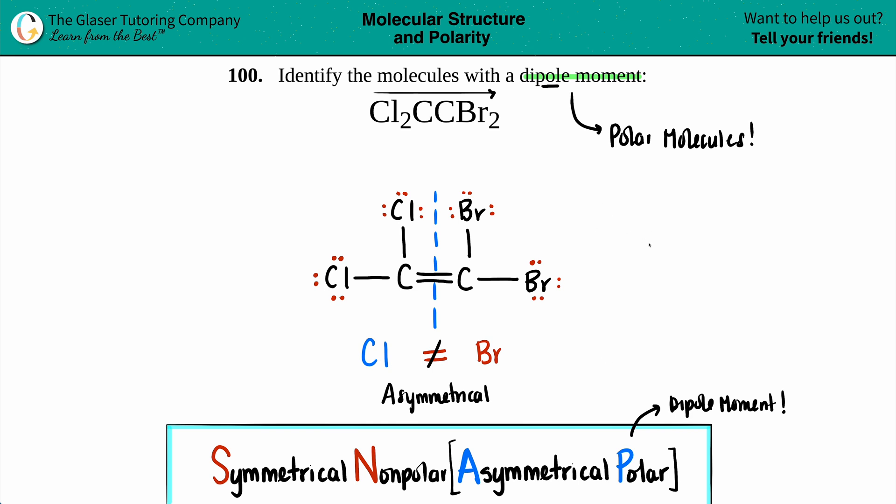If you're asymmetrical, you have a polar molecule. The pull of electrons is going to be towards the more electronegative element. Chlorine is more electronegative than bromine, so the chlorine side pulls electrons toward them. It's a polar molecule with a dipole moment.